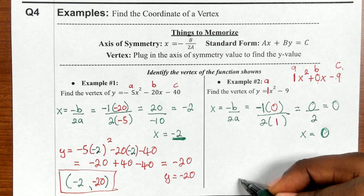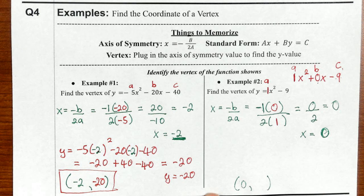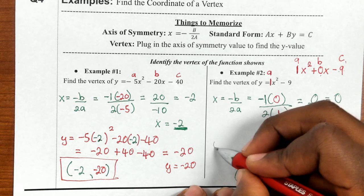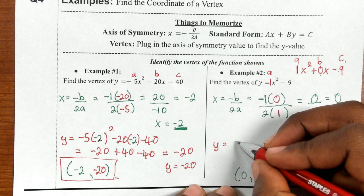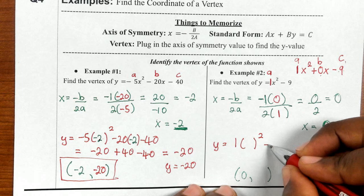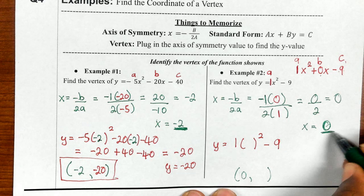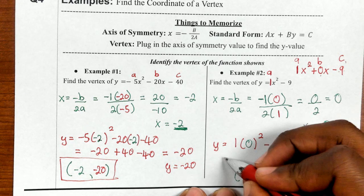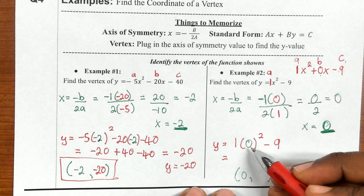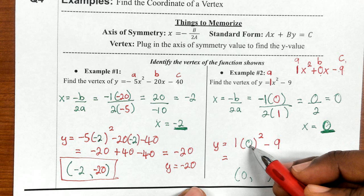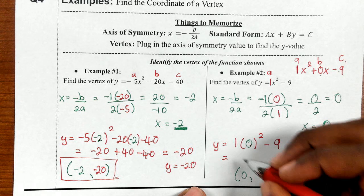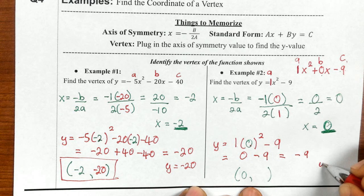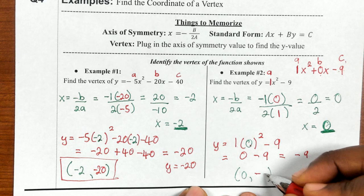Now I need to find the y value. I'll rewrite the equation and replace x with parentheses, putting 0 inside. You can use a calculator — I'm not going to. 0 squared is 0; 0 times 1 is 0; bring down negative 9; 0 minus 9 is negative 9. So the y value of my vertex is negative 9.